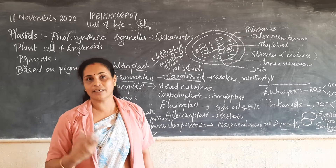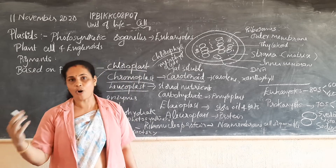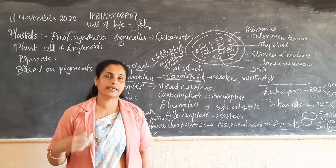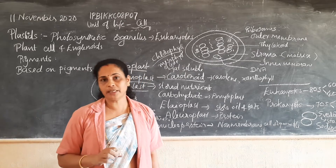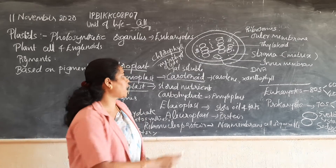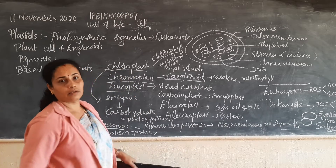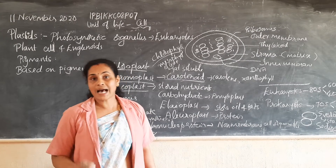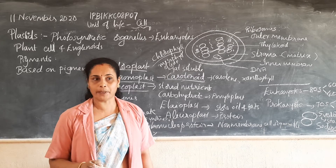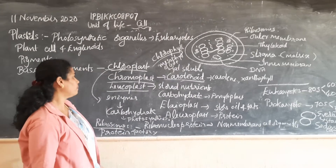Mainly the flower parts and fruits have different colors - red, orange, etc. All these colors are mainly due to pigments called carotenoids; xanthophyll also comes under carotenoids. Then 'chloro' meaning green - plastids which contain the green color pigment called chlorophyll are called chloroplast.